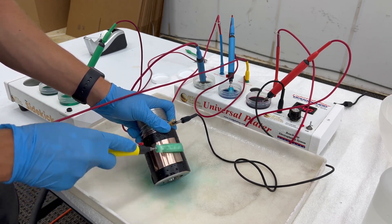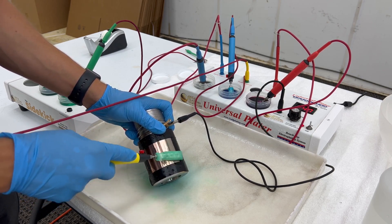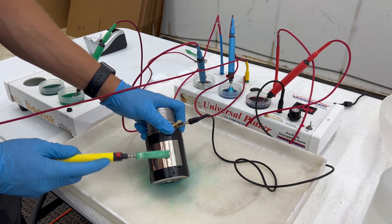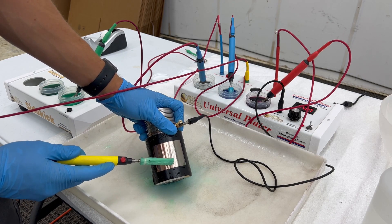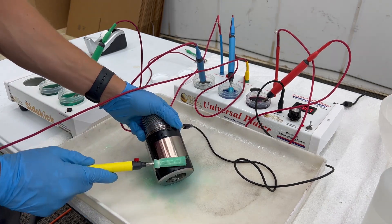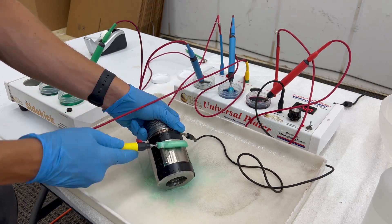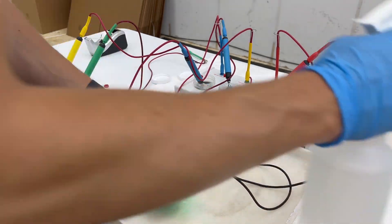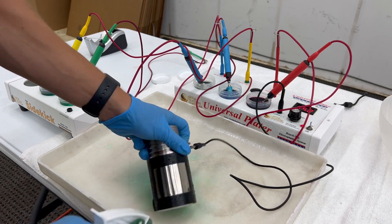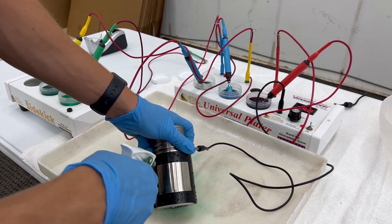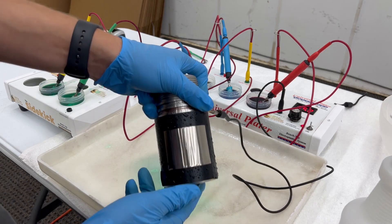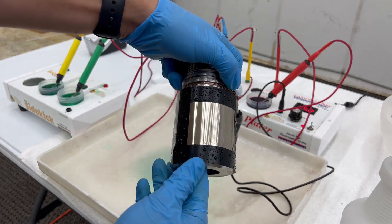You can see it's starting to turn that silvery color instead of the copper. I've gotten this nickel applied to our part—you can see it's nice and silver again.